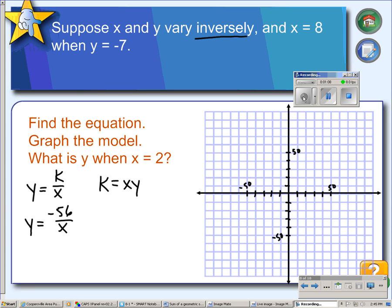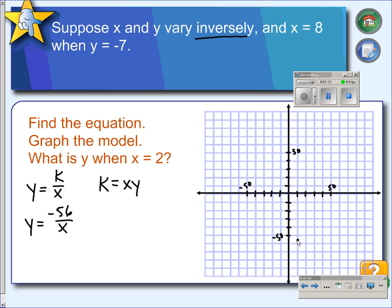If x equals 1, y would be negative 56, and if x is 56, y would be negative 1. So, we get one branch right here in the fourth quadrant, and we'll have a similar situation in this second quadrant. You get a graph that looks like that.